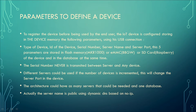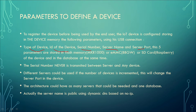The parameters to define a device are: the type of device, the ID of the device, the serial number, the server name, and the server port. With these five parameters stored in each IoT device, the first thing they do is use the server name and port to connect to that server, and the server uses the type, ID, and serial number to know if it is a valid IoT device to be connected.